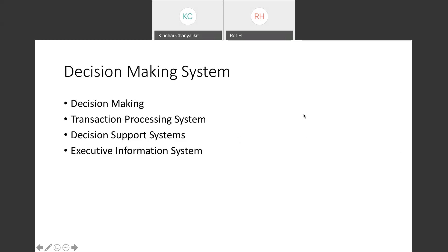For decision making systems, there are three types: the Transaction Processing System, the Decision Support System, and the Executive Information System.